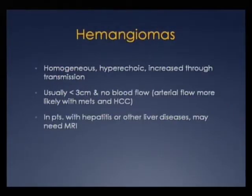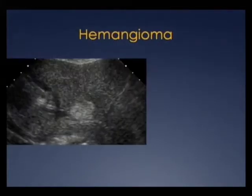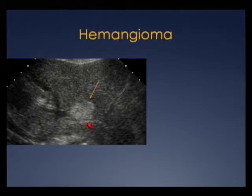Hemangiomas are common, especially in young patients. The hallmark is that they're homogeneous, hyperechoic, and have increased through-transmission. They're usually less than 3 centimeters and are not associated with increased blood flow. If you see blood flow, consider metastasis and HCC in your differential given the patient's history. In patients with hepatitis, cirrhosis, or other liver disease, you may need MRI for further characterization. Here's a uniformly echogenic lesion in a young patient with no risk factors — I'll call this hemangioma and not follow this patient. However, if the patient has HCC, hemochromatosis, or other liver disease, I'll get an MRI for confirmation.